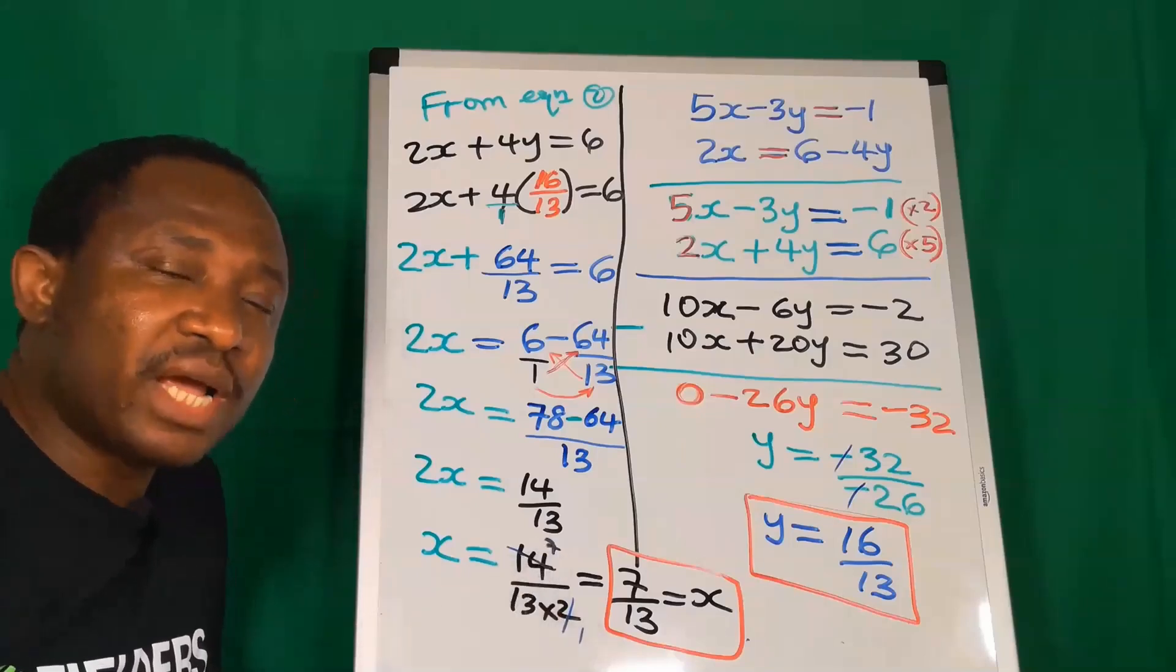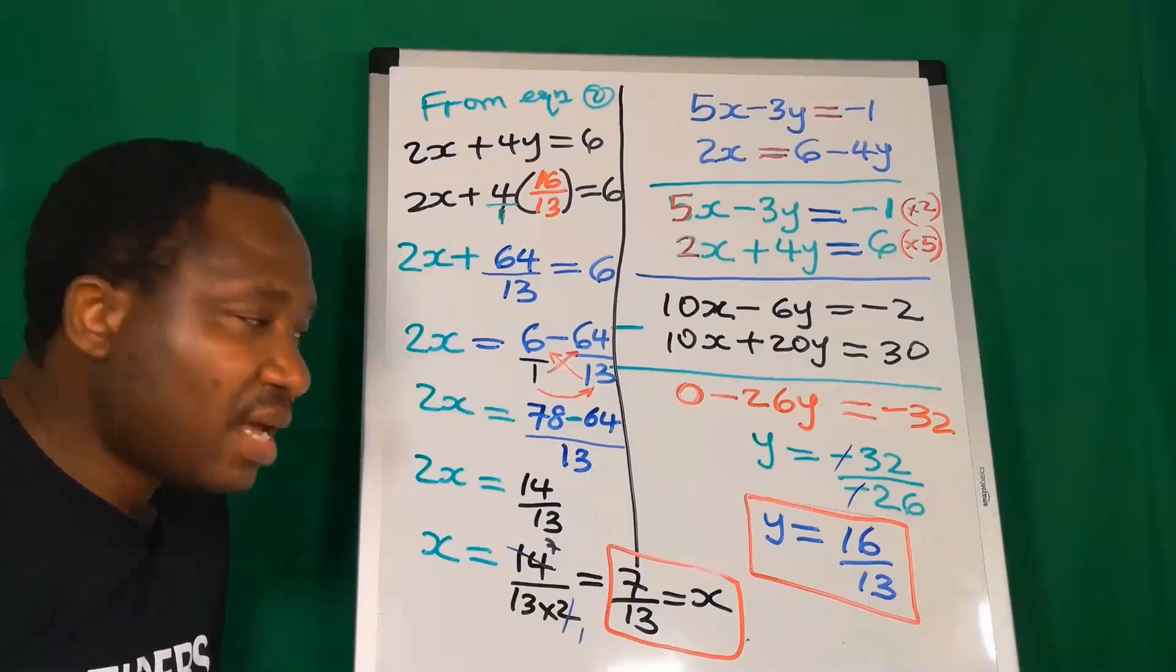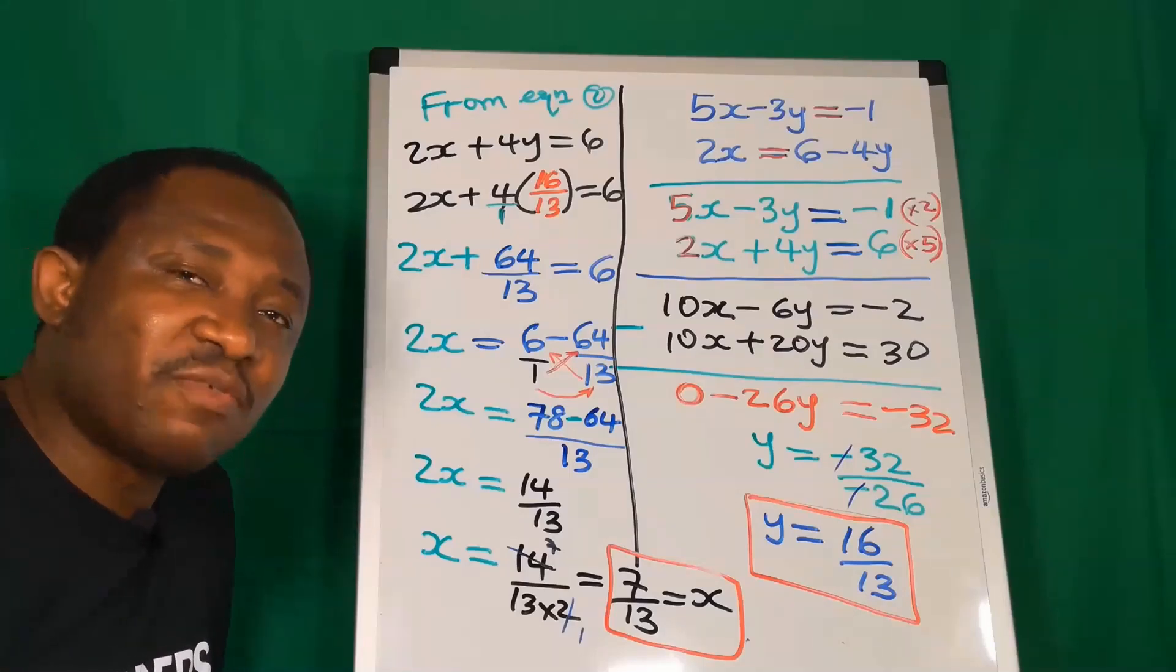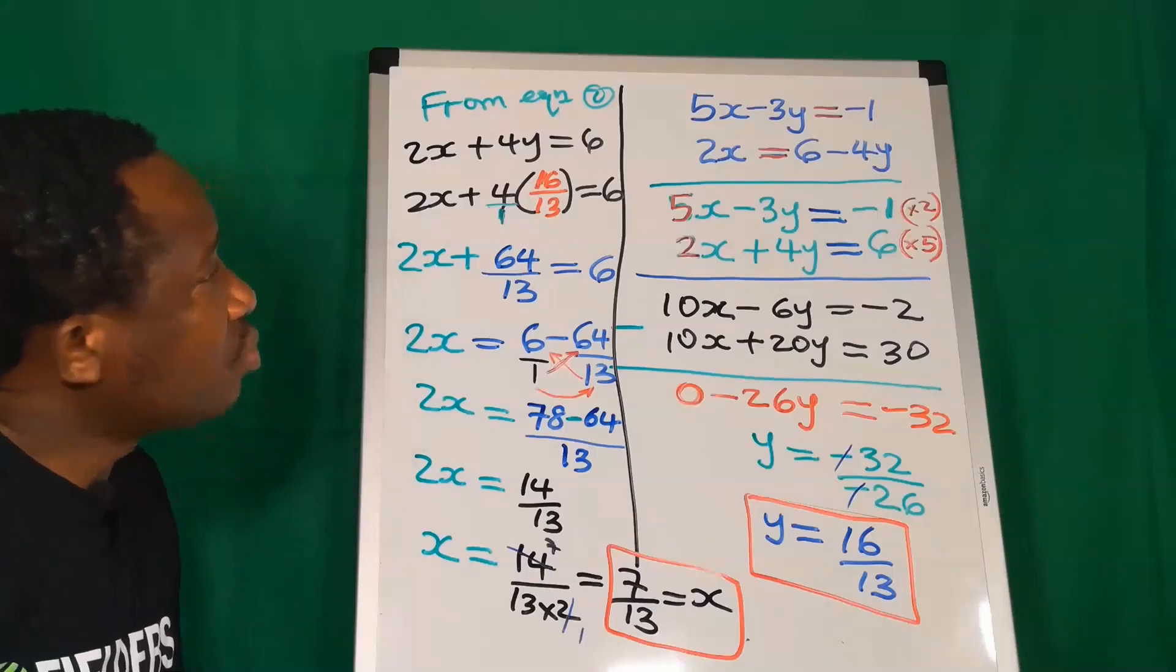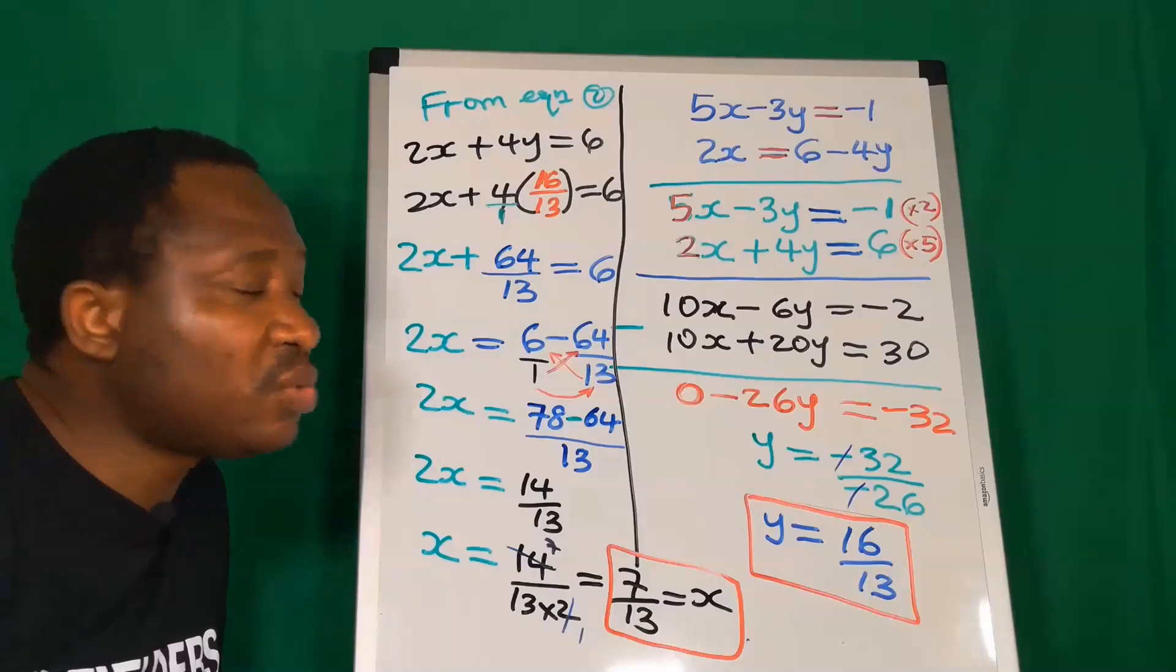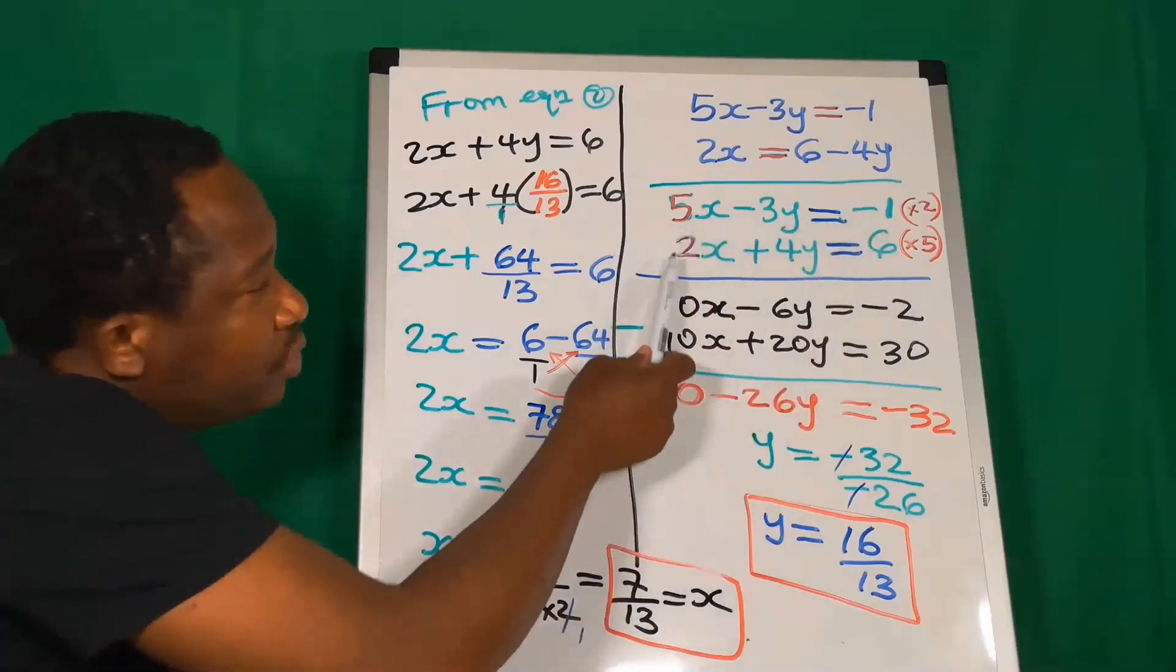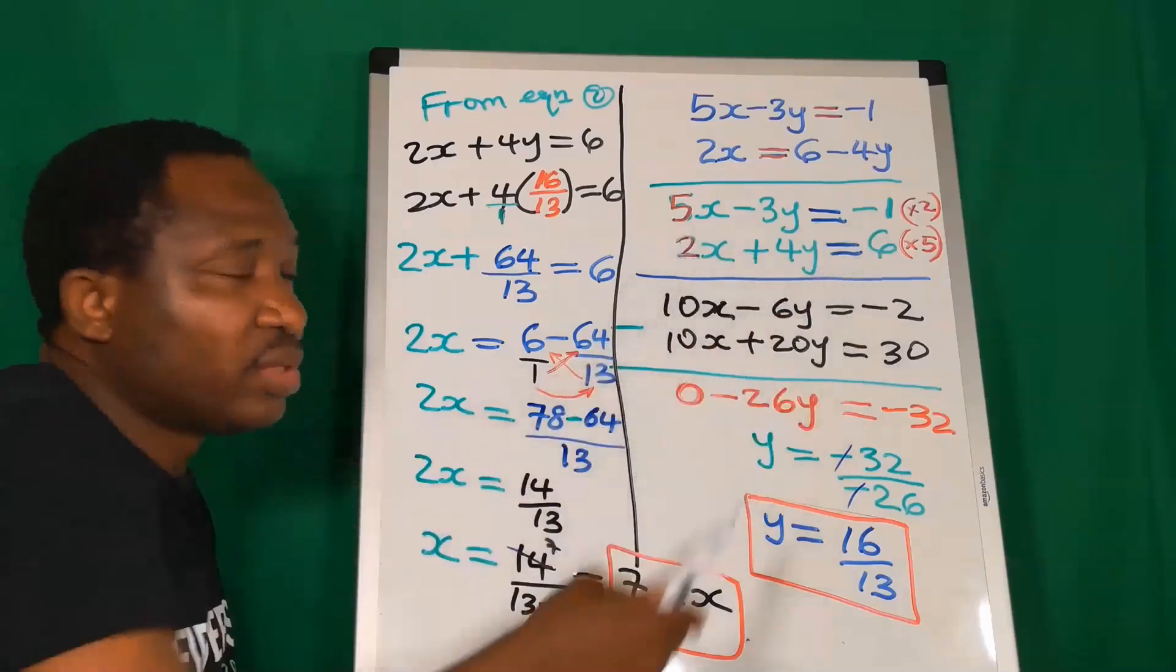We need to check for our results. We're going to substitute 7 over 13 for x and 16 over 13 for y into equation 1 and equation 2. If you substitute into equation 1, you're going to get minus 1. If you substitute into equation 2, you're going to get 6.